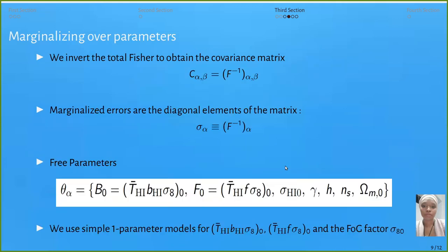Marginalizing over parameters, we invert the total Fisher to obtain the covariance, and marginalized errors are the diagonal elements of the matrix. The three parameters we are considering are B_0, F_0, and sigma. This sigma comes from the Finger of God effect, a damping term. We use fiducial one parameter models for cosmological parameters and sigma H1_0. These are parameters considered at redshift z equals zero.